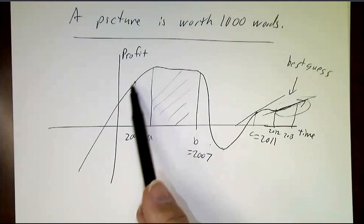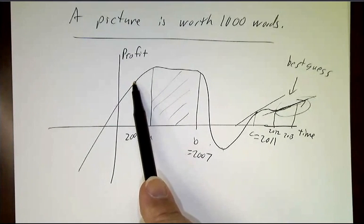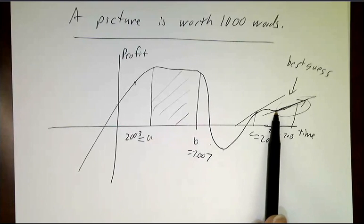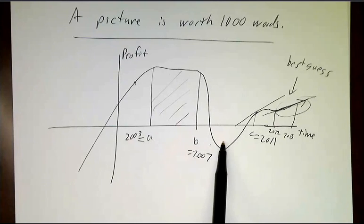The slope of the curve was the trend. The trend was really good here, really bad here. Right now it's so-so. The height of the curve is, are you doing well? Are you losing money?